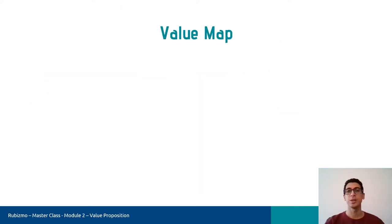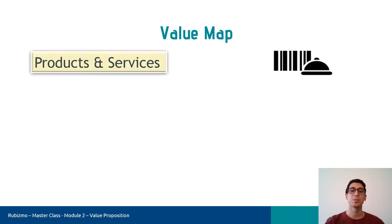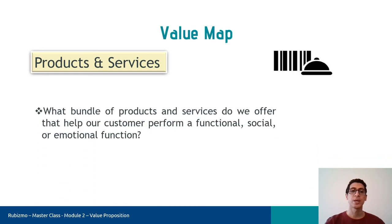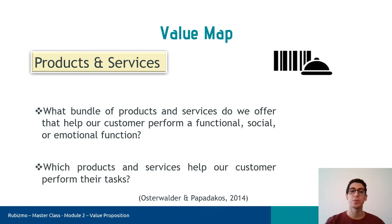Okay, we continue with the value map. Value map has three blocks, and I will start with the products and services. Where our customers' gains and pains are identified, we need to produce a product or service that best meets their expectations. To do so, we should ask what bundle of products and services do we offer that help our customer perform a functional, social, or emotional function? In other words, which products and services help our customer perform their tasks?